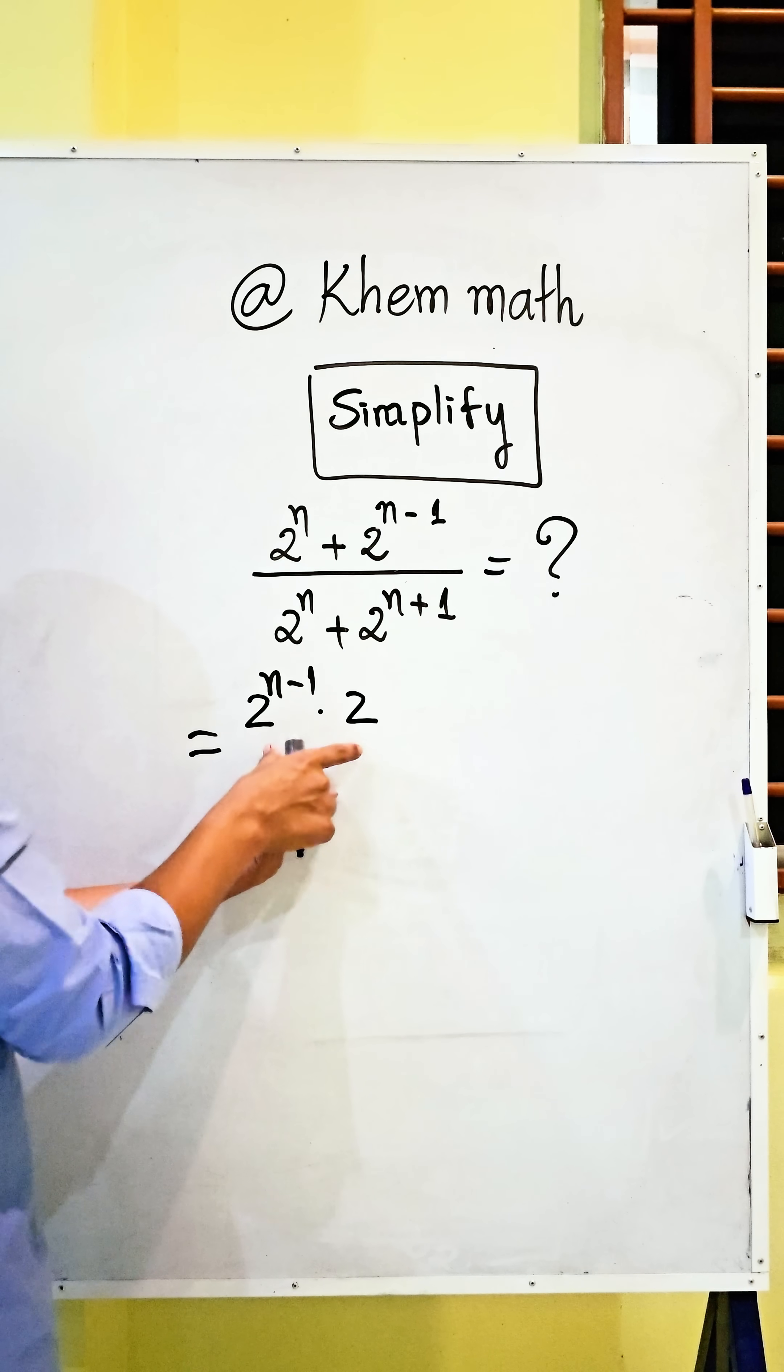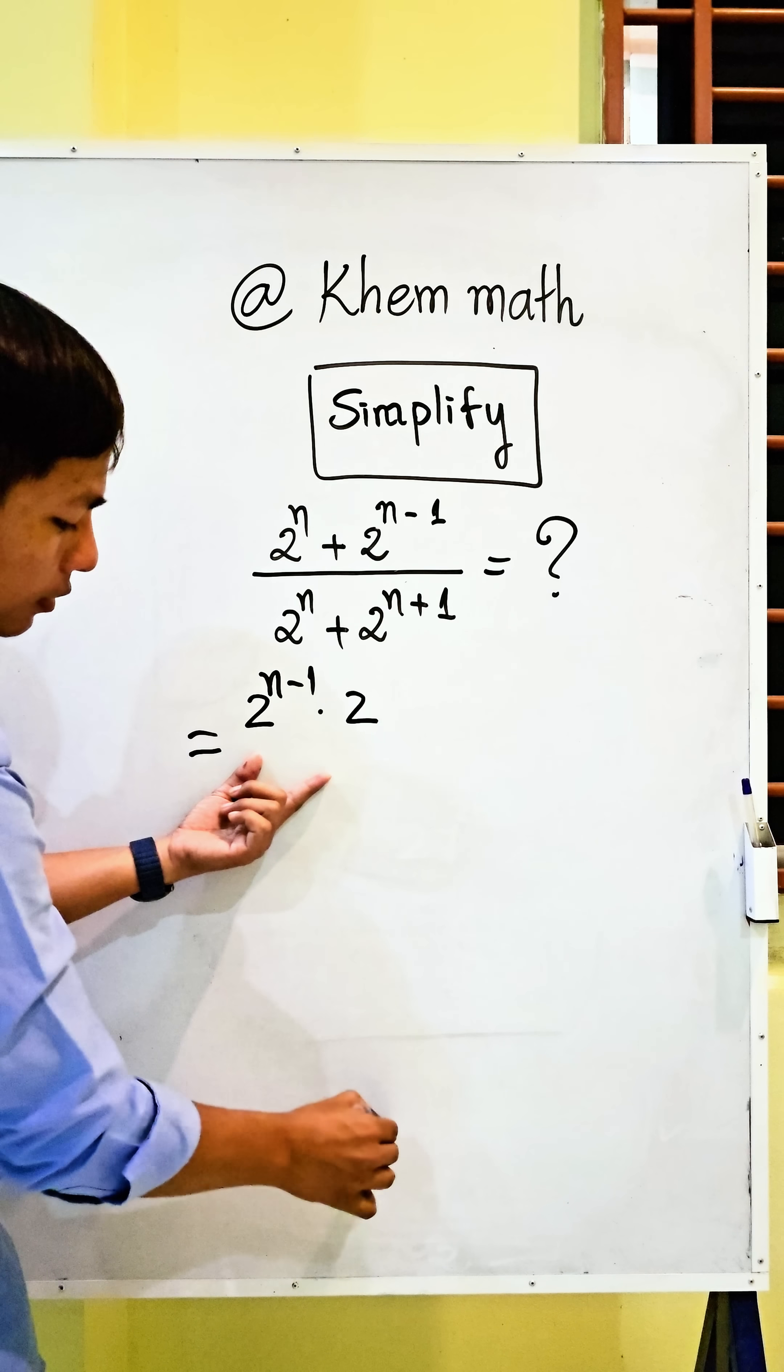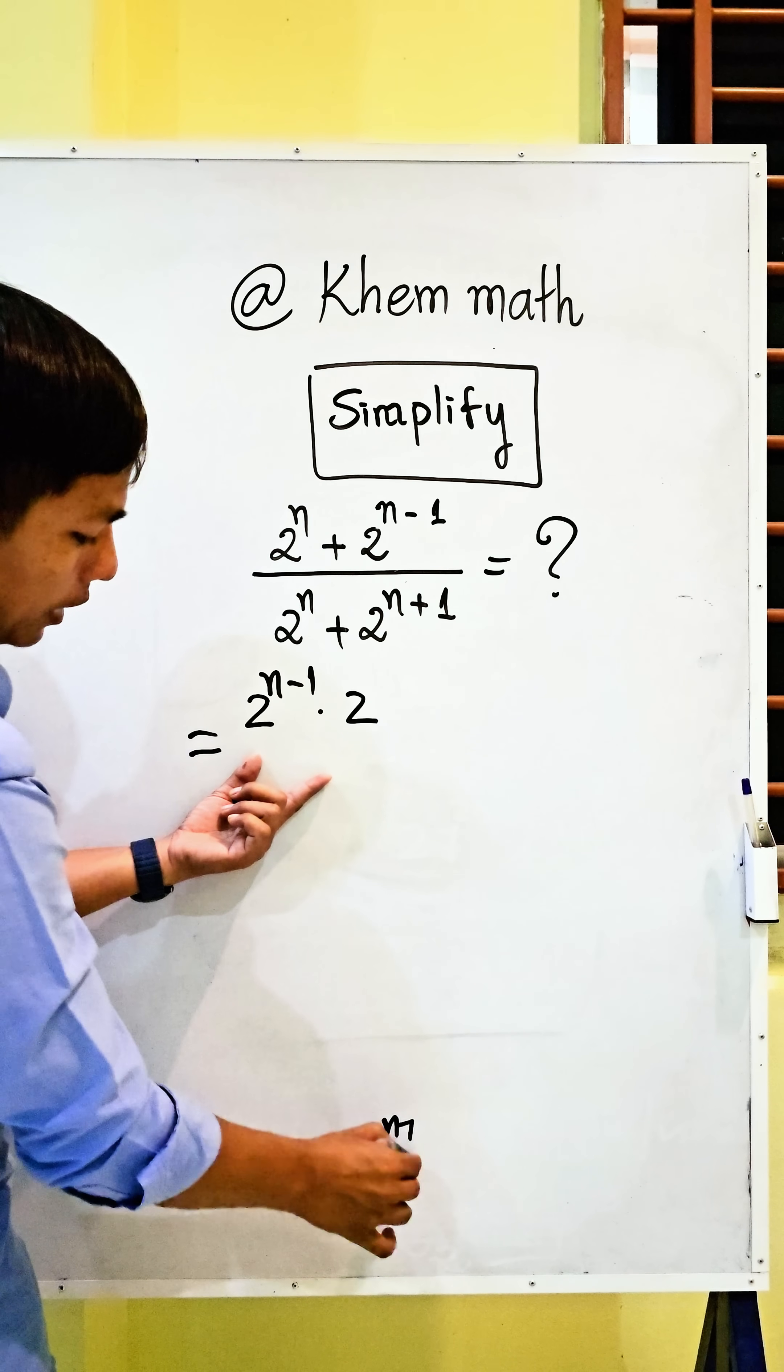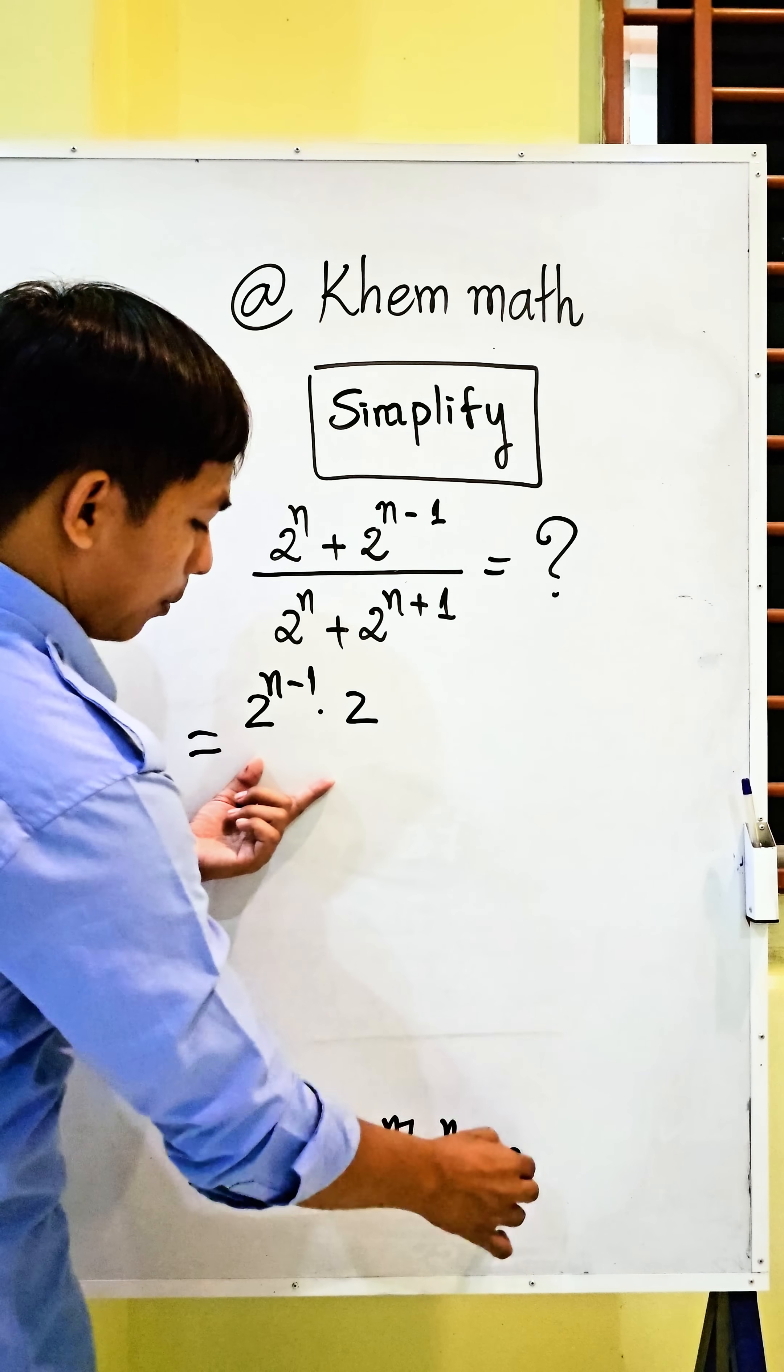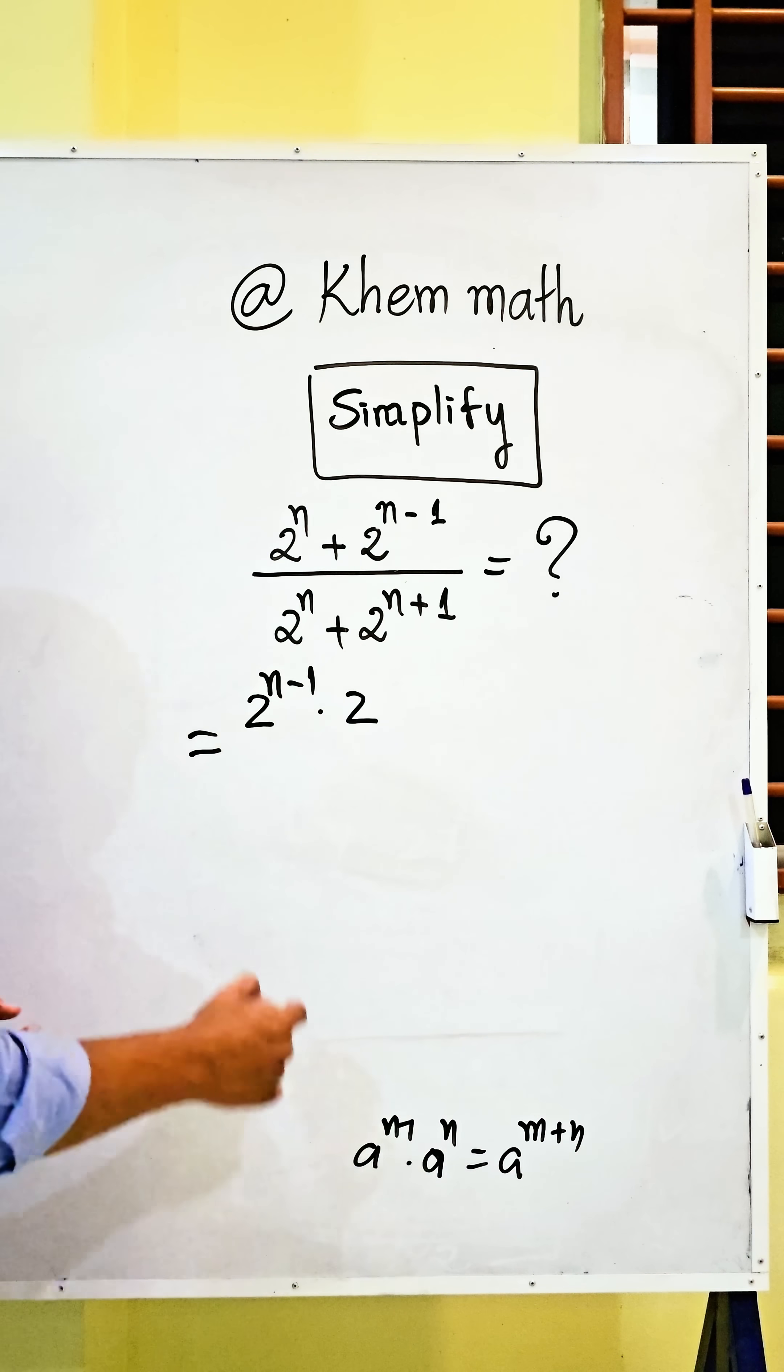So we use the formula a power m times a power n equals a power m plus n. So here we get n minus 1 plus 1, so negative 1 plus 1 equals zero. So we get 2 power n.